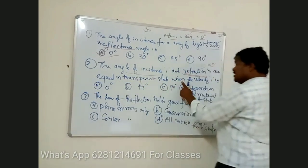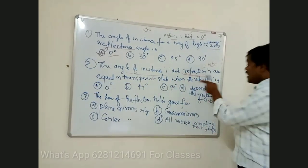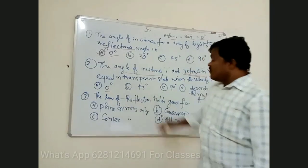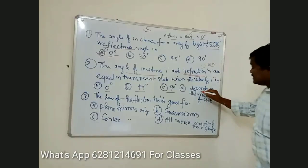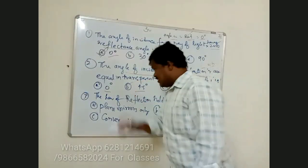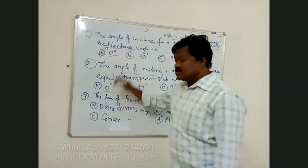Under what conditions and what angle of incidence does this happen? What is the condition? [Students respond: 90.] What is it? [Student: 0 sir.] Is 90 equal to 0? [Teacher: Yes.] What is the condition — 90 sir?